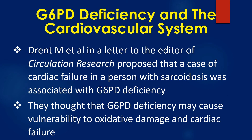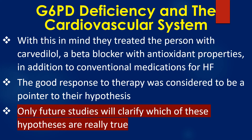Drent M and colleagues, in a letter to the editor of Circulation Research, proposed that a case of cardiac failure in a person with sarcoidosis was associated with G6PD deficiency. They thought that G6PD deficiency may cause vulnerability to oxidative damage and cardiac failure. With this in mind, they treated the person with Carvedilol, a beta blocker with antioxidant properties, in addition to conventional medications for heart failure. The good response to therapy was considered to be a pointer to their hypothesis.